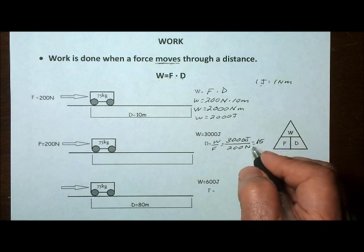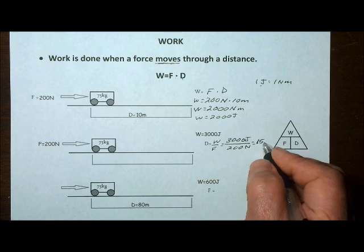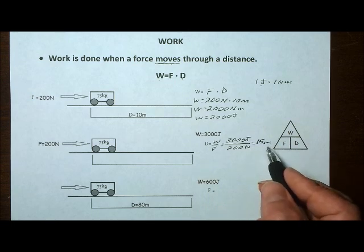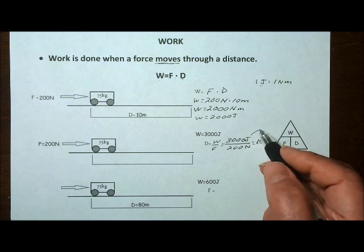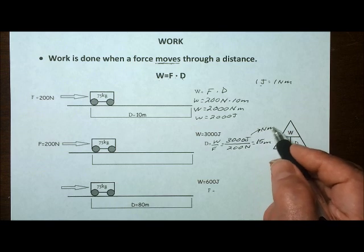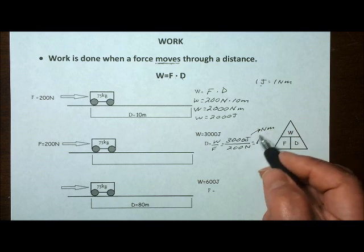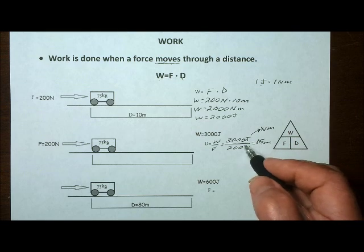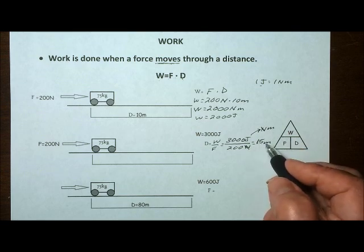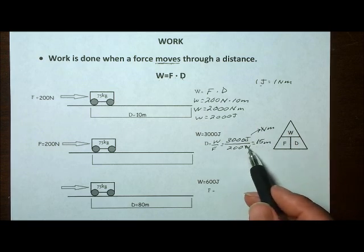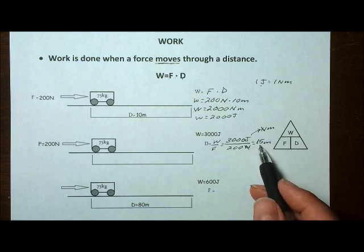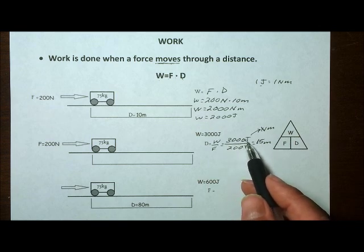And the unit is going to be meters. You might ask yourself why it's meters and not joules per newton. Keep in mind that the joule is really a newton meter, so the newton factors out, leaving meters in our answer. The answer for the second problem is 15 meters. If a force of 200 newtons is applied to an object to move it through 15 meters, 3,000 joules of work will be done.